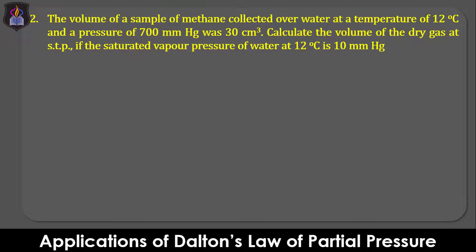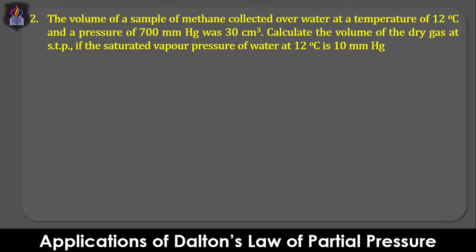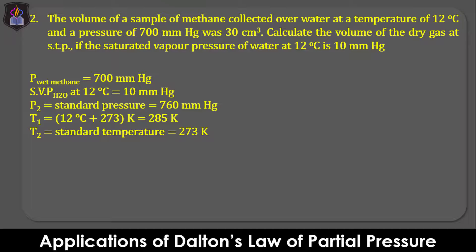Question 2: The volume of a sample of methane collected over water at 12°C and 700 mmHg was 30 cm³. Calculate the volume of the dry gas at STP if the saturated vapor pressure of water at 12°C is 10 mmHg. From the question: pressure of wet methane (total pressure) is 700 mmHg; saturated vapor pressure of water at 12°C is 10 mmHg; standard pressure P2 is 760 mmHg; T1 is 12°C = 285 K; T2 is 273 K; and initial volume V1 is 30 cm³.